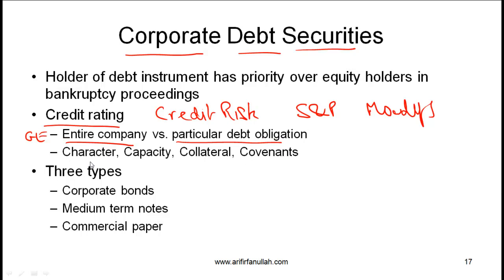The four C's are character, capacity, collateral, and covenants. Character essentially refers to the quality of the management — if the management team is strong, has a good reputation, a clear strategic vision, and the ability to act on that vision, then the company will score well on this characteristic.